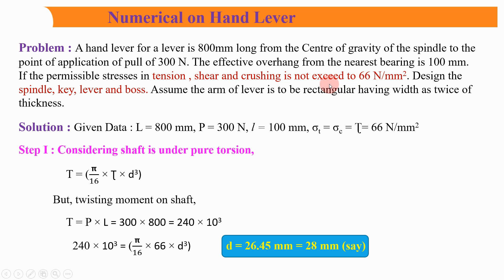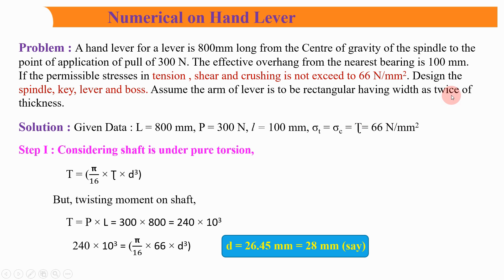So it means our permissible tensile stress, permissible shear stress and permissible crushing stress all have one value that is 66 Newton per mm square. Next, design the spindle, key, lever and the boss. Assume the arm of the lever is to be rectangular, having width as twice the thickness. Its width we need to consider as twice its thickness.